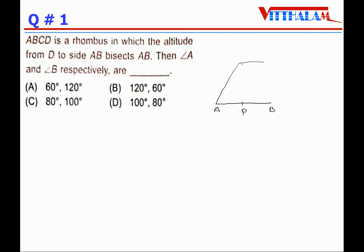The rhombus looks like this: ABCD, with the altitude from D bisecting AB at point P. Since the altitude bisects AB and is perpendicular to AB, we have a 90-degree angle at P, and AP equals PB. Let us also join B and D.